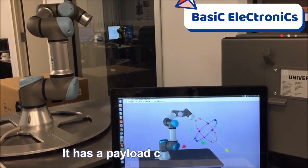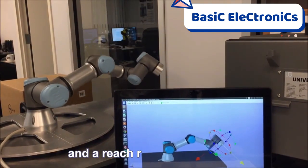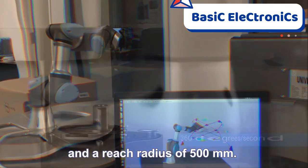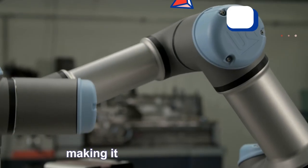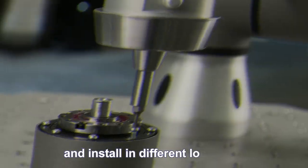It has a payload capacity of three kilograms and a reach radius of 500 millimeters. The robot arm is made of lightweight materials making it easy to move around and install in different locations.